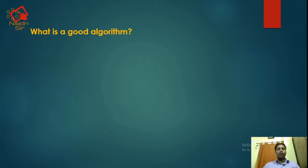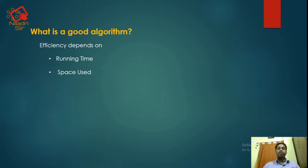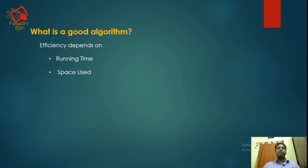What is a good algorithm? The features required to make an algorithm a good one: number one, efficiency depends upon the running time and the space used. Running time means the time required to execute a program. Space used means the memory required to store different data types and instructions of that program. A program may contain many instructions and data sets, basically for input and output purposes.